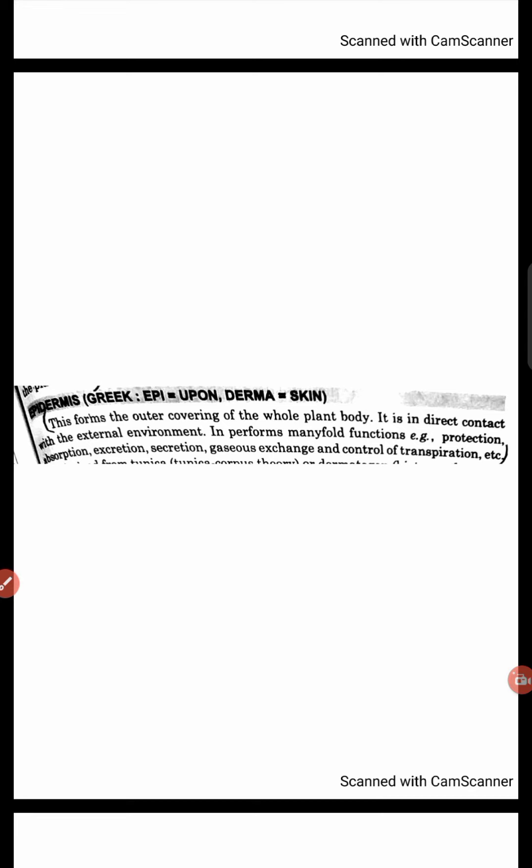Derma means skin. So the outermost skin layer of the plant body is the epidermis. The outermost covering forms around the whole body and is in direct contact with the environment for protection, absorption, excretion.